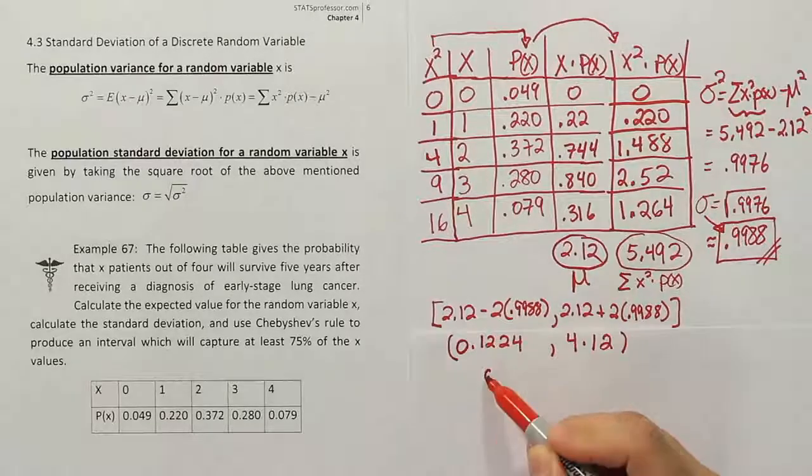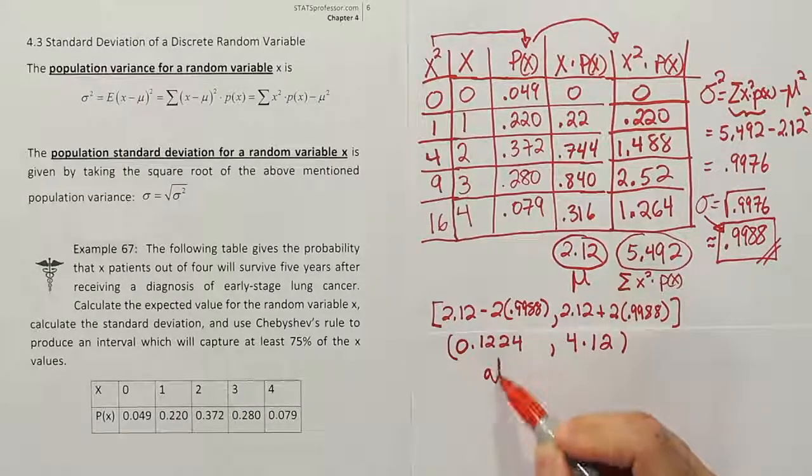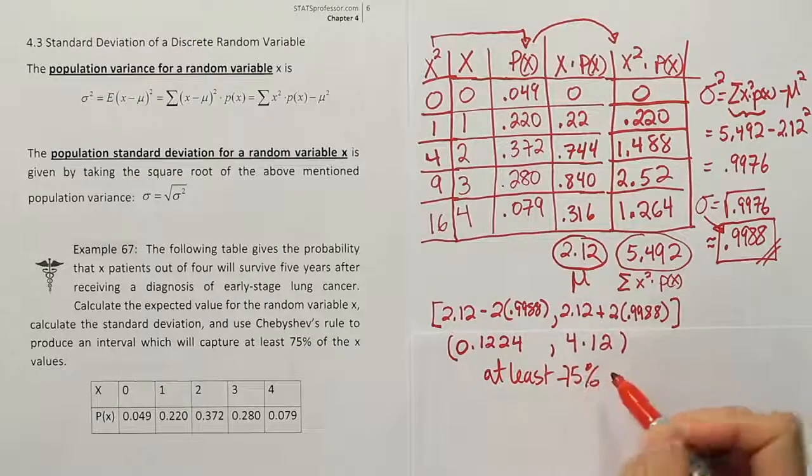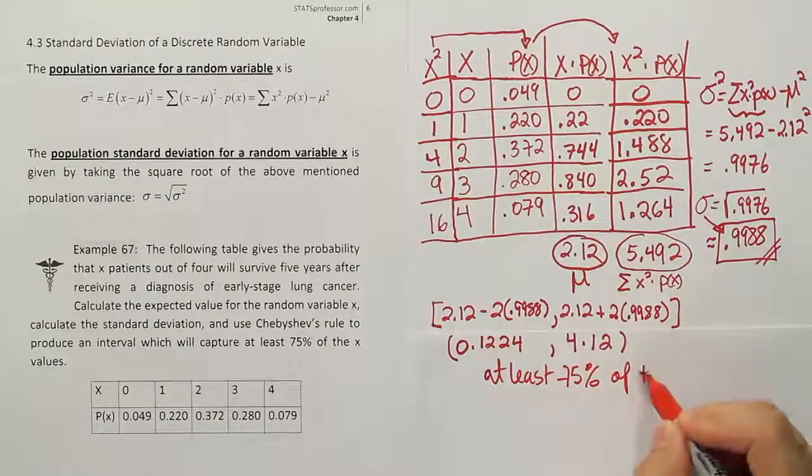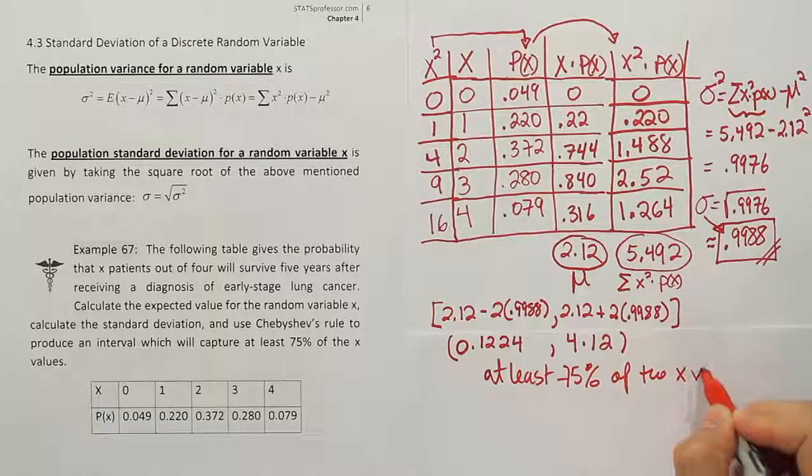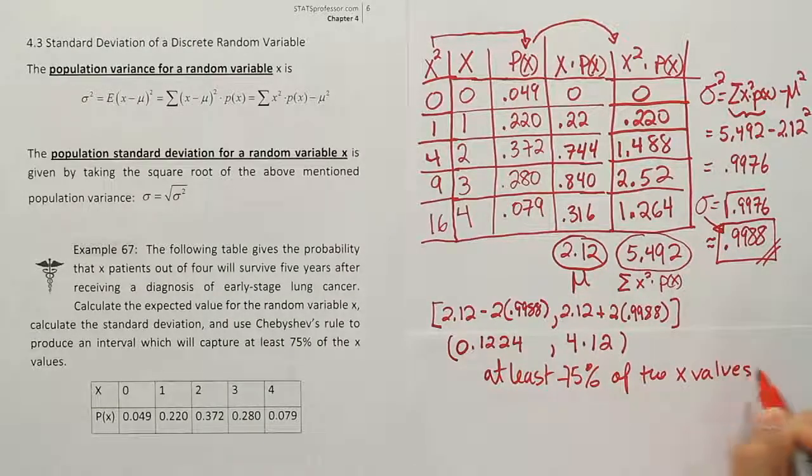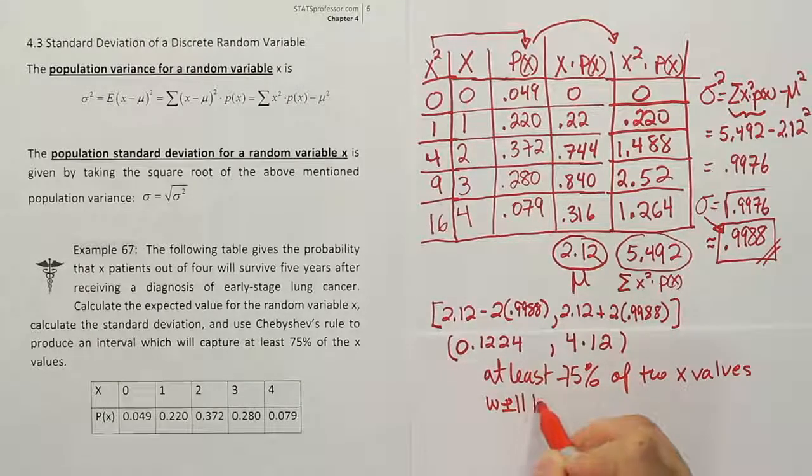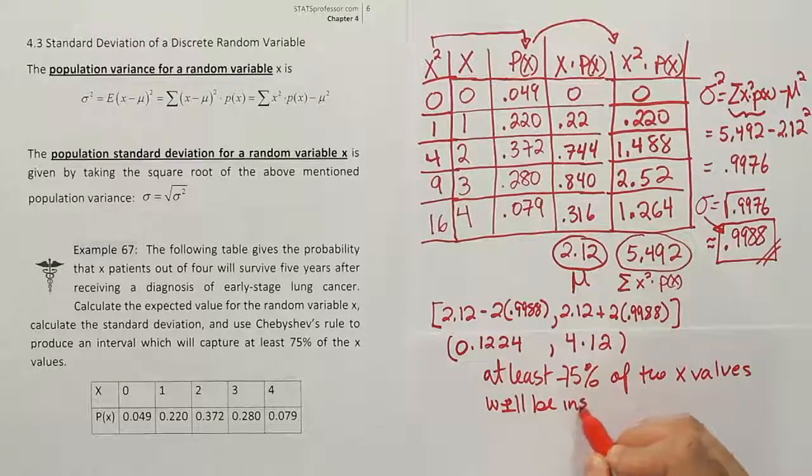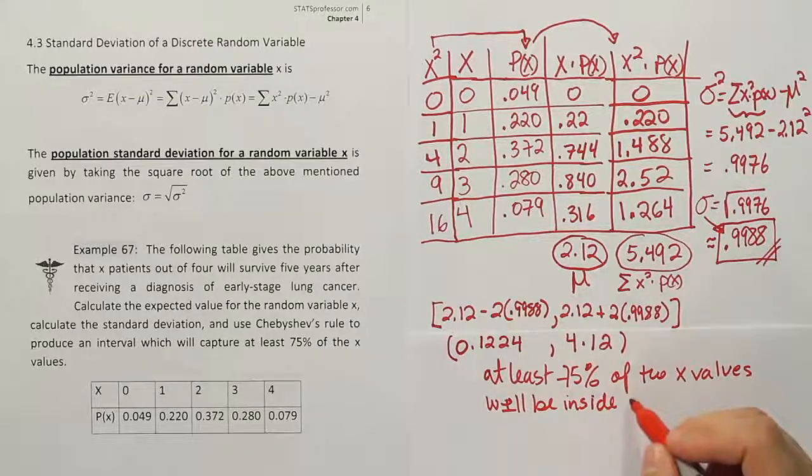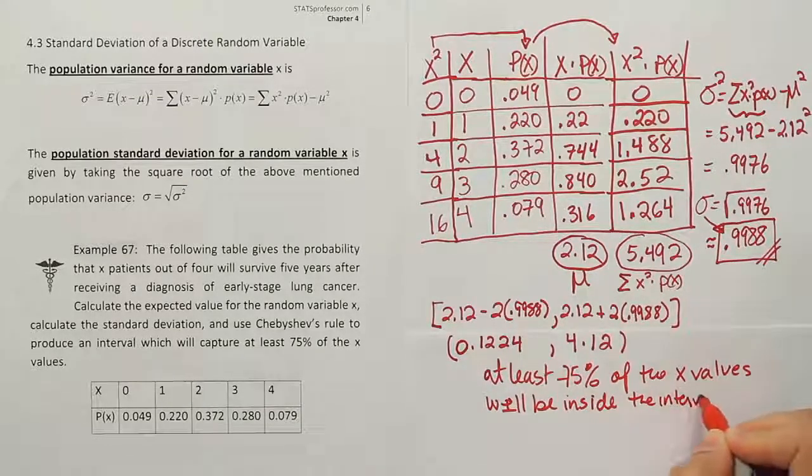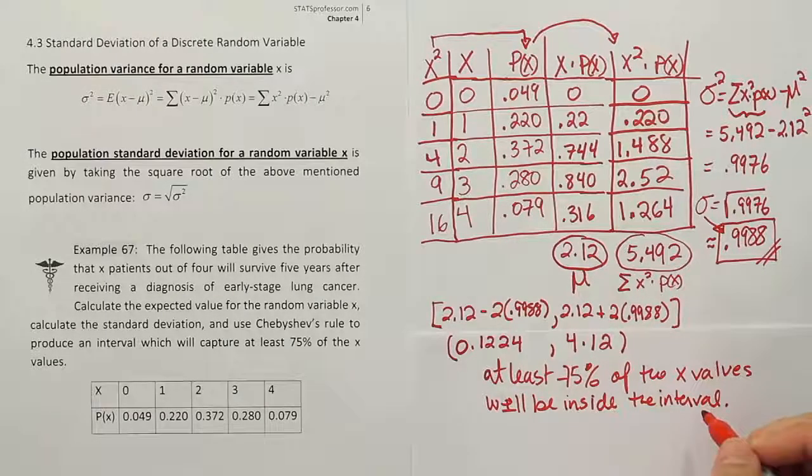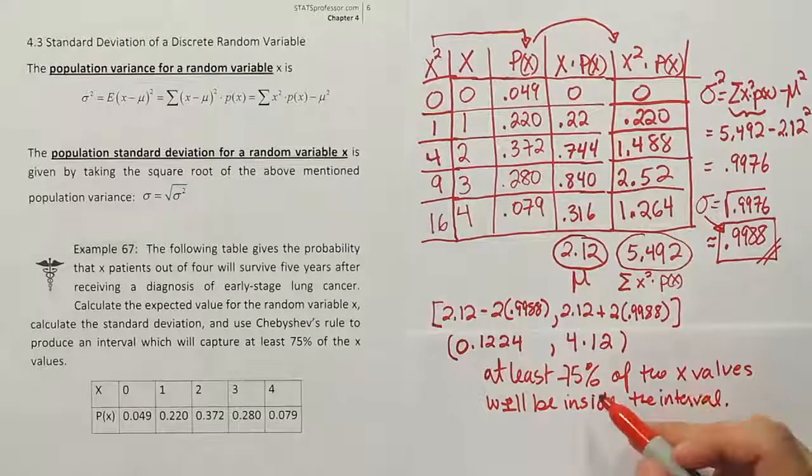And then from there, what we're going to say is that, hey, at least 75% of the X values will be inside the interval. So we'll be inside the interval.